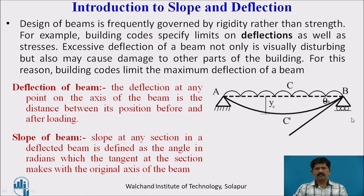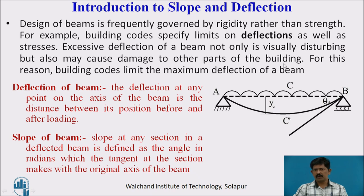Why are slope and deflections necessary to be measured? The design of a beam is governed by rigidity rather than its strength. Therefore building codes specify limits on deflection as well as stresses. Excessive deflection of the beam is not only visually disturbing but may also cause damage to other parts of the building, so building codes limit the maximum deflection.